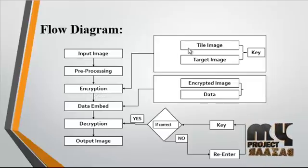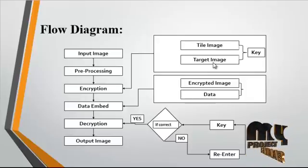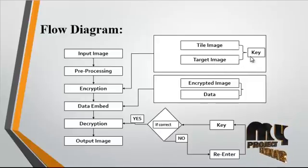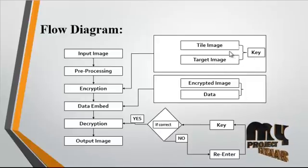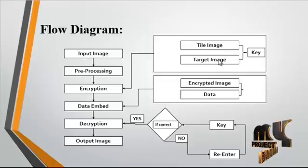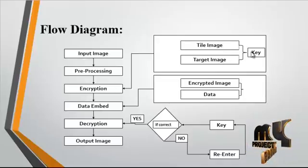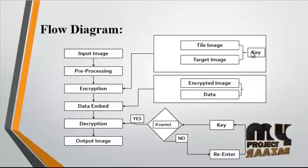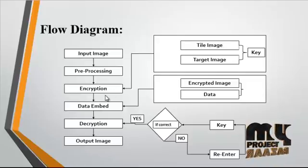After removing the noise, the pre-processed image undergoes encryption. In this encryption, two major elements are considered: the tile image and the target image. These two images are embedded into each other using a key. After embedding, the key is used to encrypt the image, and the encrypted image comes out from the encryption process.